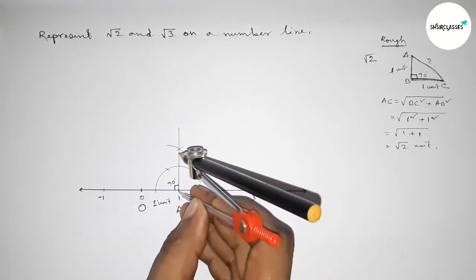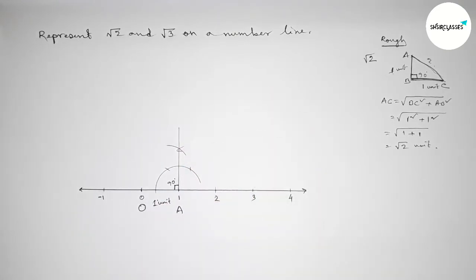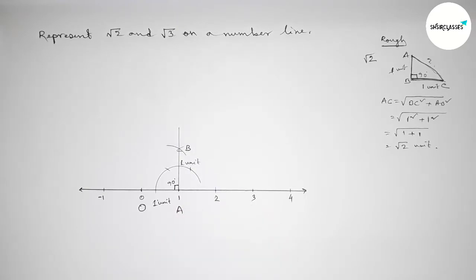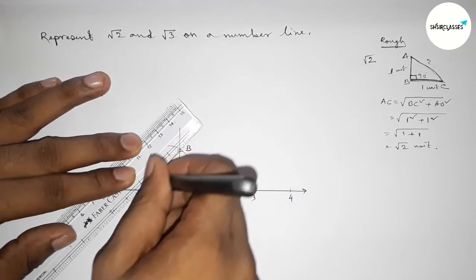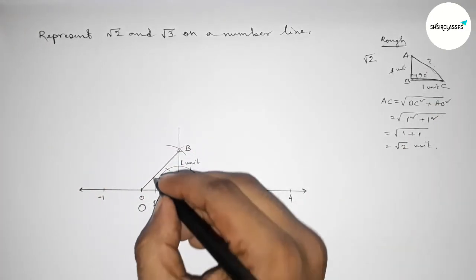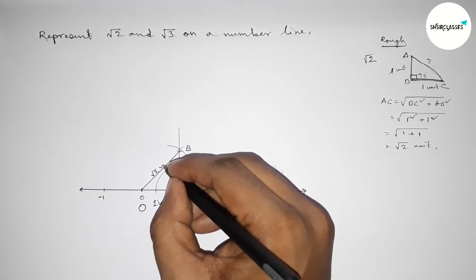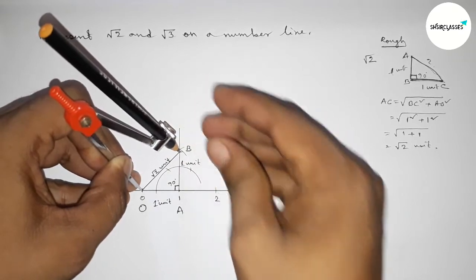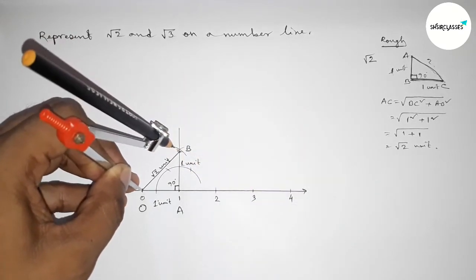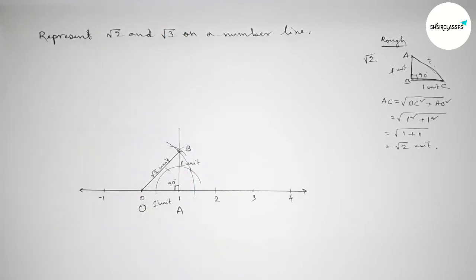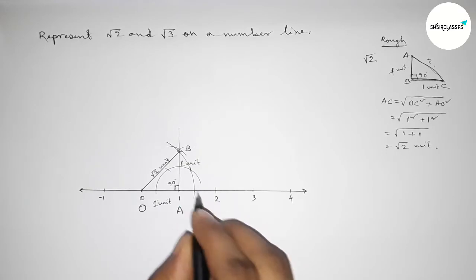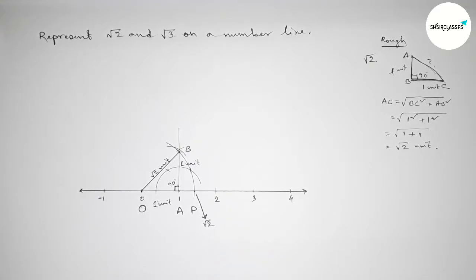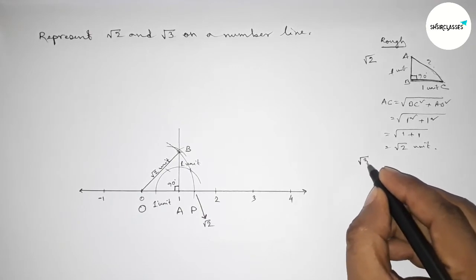Putting the compass on point A and cutting to mark point B, which is one unit length. Now joining O and B. From this we can say that OB is obviously root 2 units. Taking the length OB equal to root 2 using compass, drawing an arc through point B which meets the number line at a point — taking that point as B prime, this is root 2 on the number line.